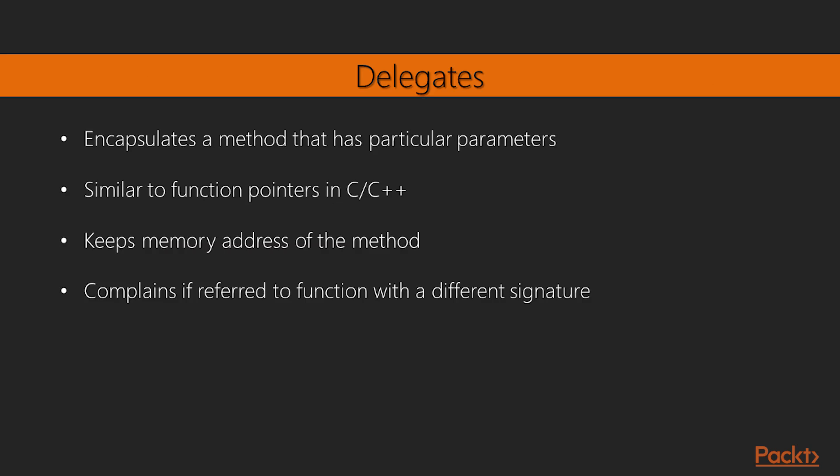A delegate is a data type in C-sharp that encapsulates a method that has particular parameters and return types. In other words, a delegate will define the parameters and the return type of a method. Delegates are similar to function pointers in C or C++ since both store the reference to the method with a particular signature. Like a function pointer in C or C++, a delegate keeps a memory address of the method it refers to. The compiler will complain if it refers to a function with a different signature.